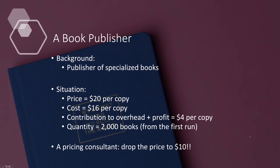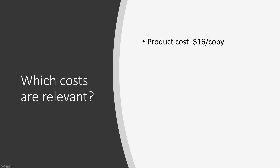The key to this case lies in the role of costs in pricing. There are different types of costs. The question is: what type of costs are relevant, and what type of costs are not? The book production cost is $16 per copy. Is this cost relevant to our pricing decisions for the leftover books? Well, actually, it is not.